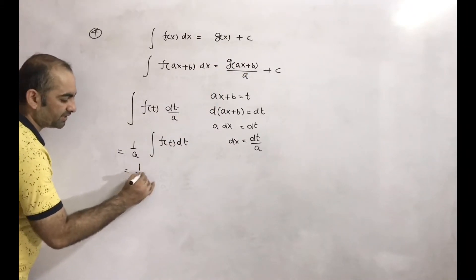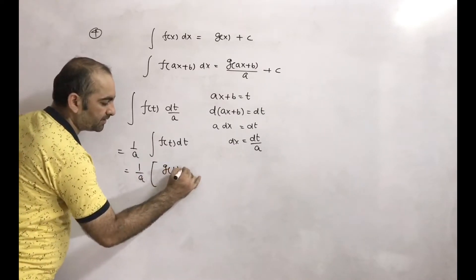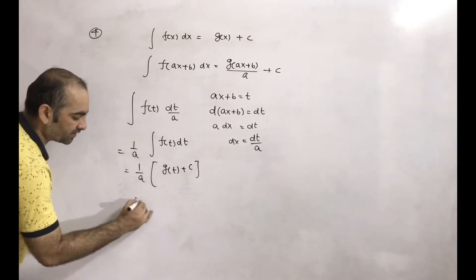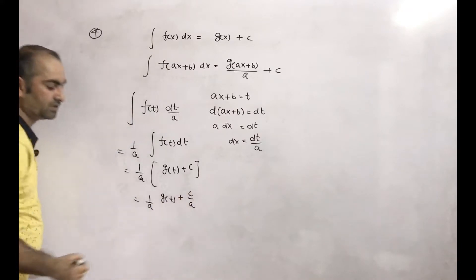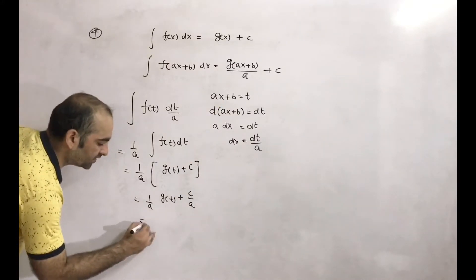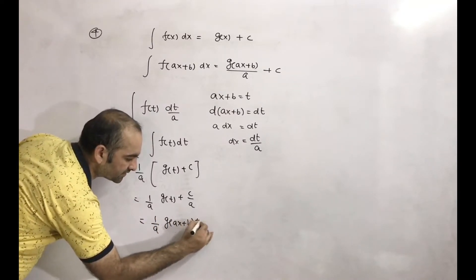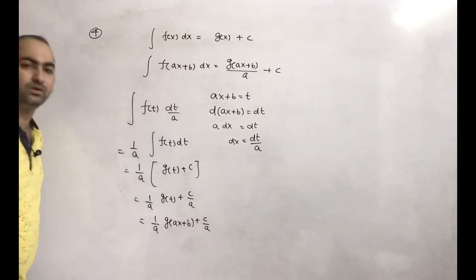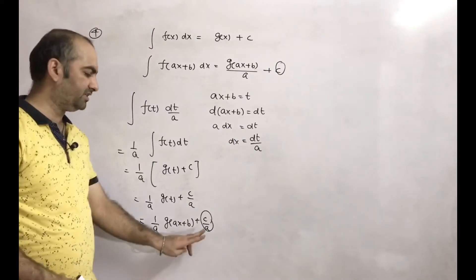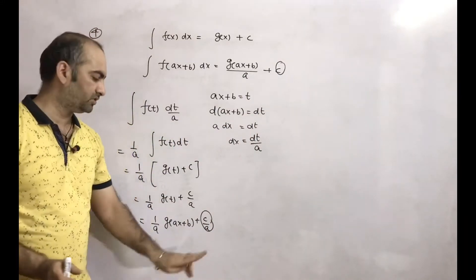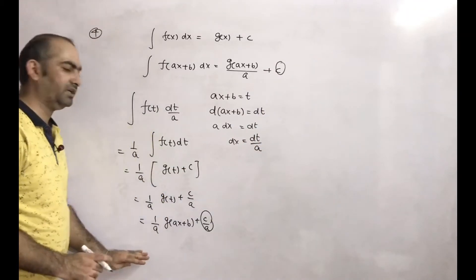So this integration gives 1/a times [g(t)+c], which we can write as (1/a)g(t) + c/a. Now t value is ax+b, so this becomes (1/a)·g(ax+b) plus c/a. Now c/a we can write as c also, because a constant divided by a constant is still a constant. So c/a we are writing as c. This is your integration.